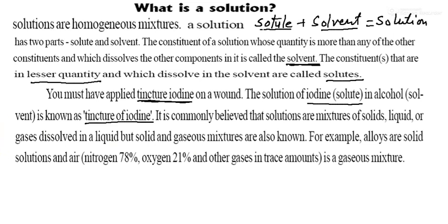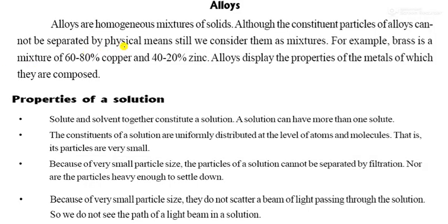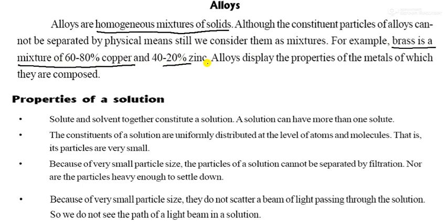What is an alloy? Alloys are homogeneous mixtures. Although the constituent particles of an alloy can be separated by physical means, we still consider them a mixture. For example, brass is a mixture — sixty to eighty percent copper and forty to twenty percent zinc. They are mixed and melted to form an alloy, which displays the properties of the metals of which they are composed.